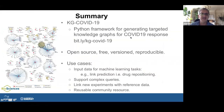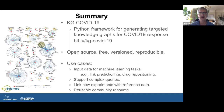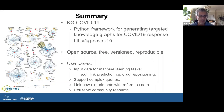As a summary, this is a Python framework for generating knowledge graphs for COVID-19 research efforts. It's an open source, free, reproducible resource. The primary use cases we are targeting include machine learning tasks like link prediction and search via similarity, support for complex queries across a disparate collection of data types, and linking new experiments with reference data.